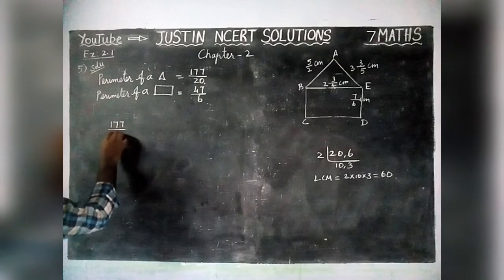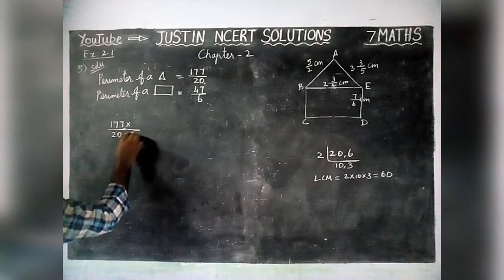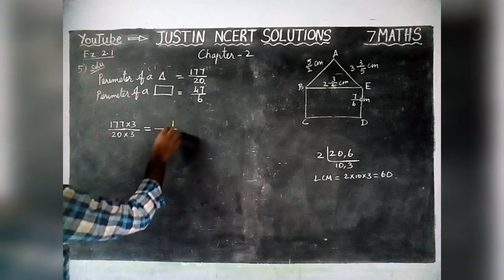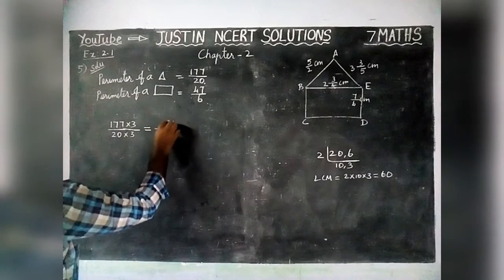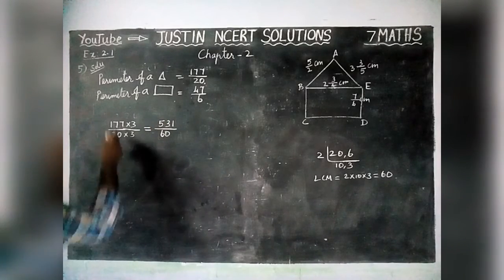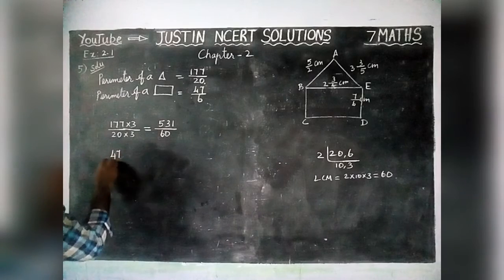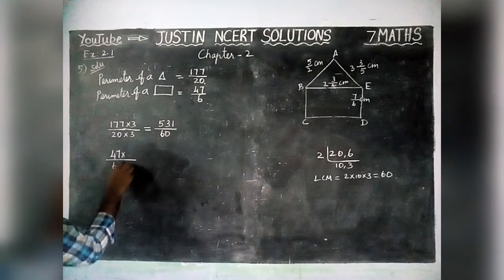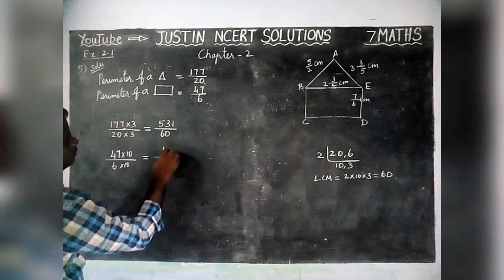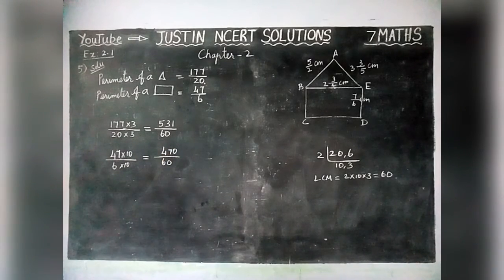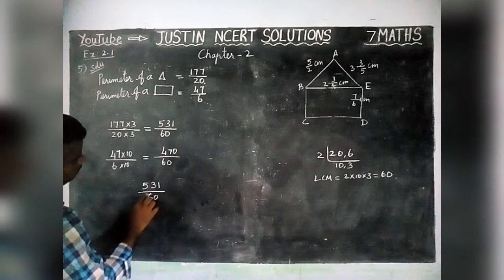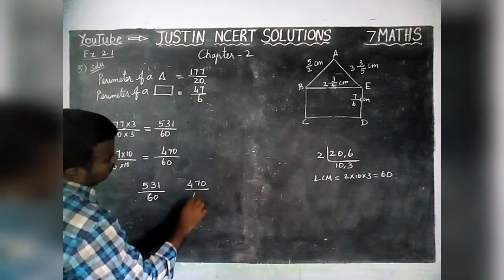For the triangle: 177/20 × 3/3 = 531/60. For the rectangle: 47/6 × 10/10 = 470/60. Now the denominators are common, so we can compare the numerators. 531 is the greatest value, so 531/60 is greater than 470/60.